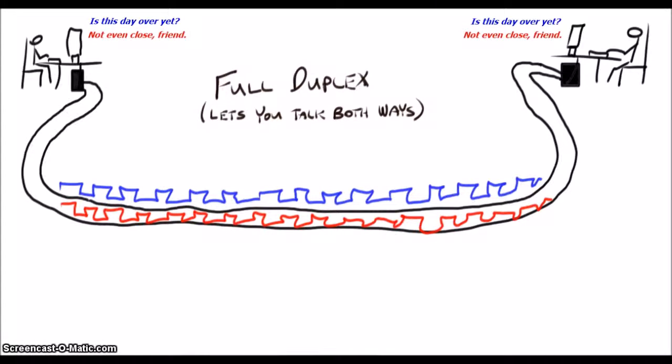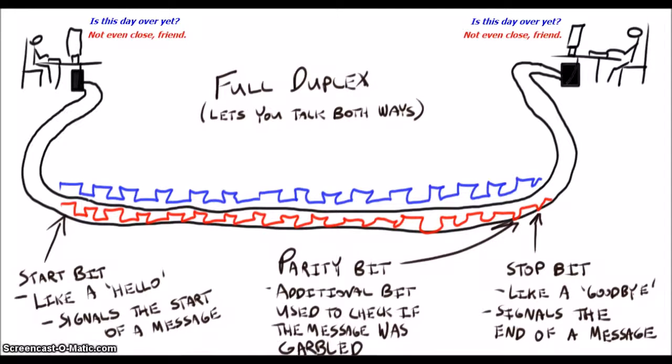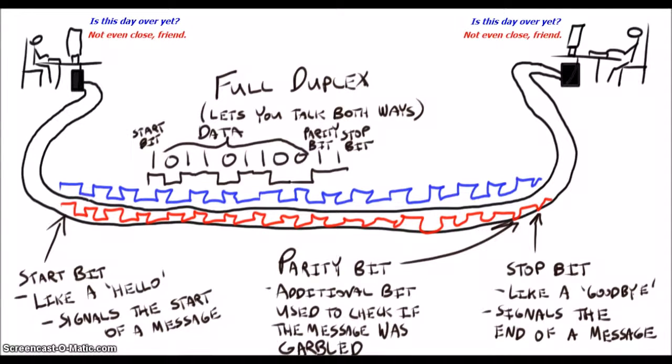In order for them to really understand what is going on, you need to let the receiver know when the message starts and stops, which is accomplished by the start and stop bit. You'll also want to add in a parity bit which checks to see if the bits you are sending got messed up somewhere in the middle of the transmission. So for every eight bits of information, we would actually be sending 11 bits.